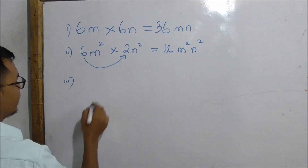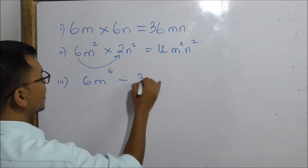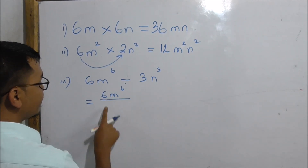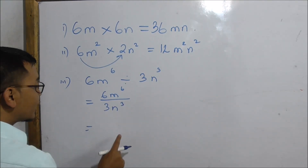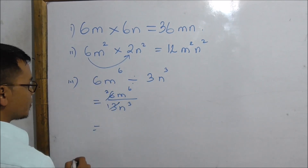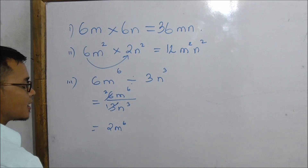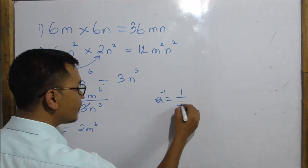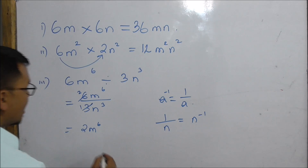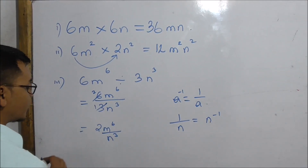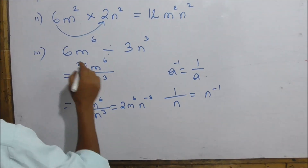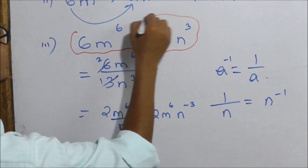We are going to take part in division. 6M to the power 6 divided by 3N to the power 3. So 6 divided by 3 is 2. 3 into 1 is 3, 3 into 2 is 6. Our answer is 2M to the power 6. A inverse 1 equals 1 by A. Using N inverse, dividing N to the power 3, the answer is 2M to the power 6 N inverse 3.